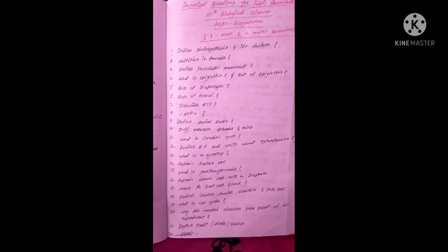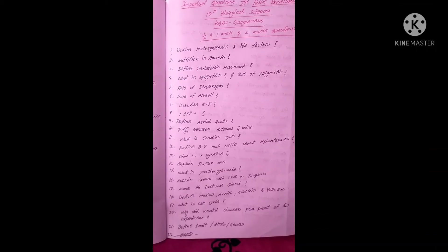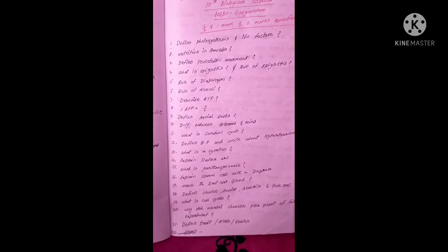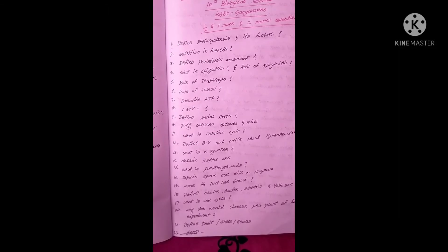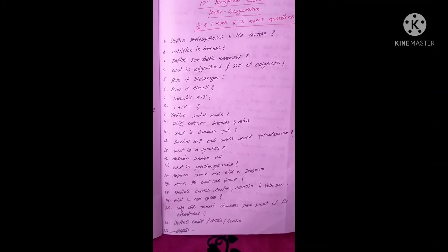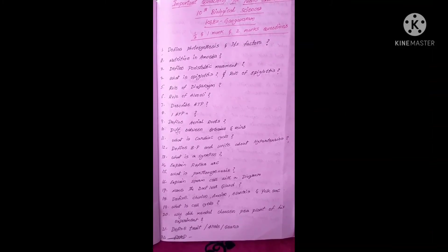The next question is the role of the diaphragm. The sixth one is the role of alveoli — what role is performed by alveoli? Write in a single sentence. Next: describe ATP (adenosine triphosphate). Then: one ATP is equal to how many kilocalories? The ninth question is: define aerial roots. The tenth question is: the difference between arteries and veins. Next: what is cardiac cycle? Define blood pressure and write about hypertension. What is a synapse?